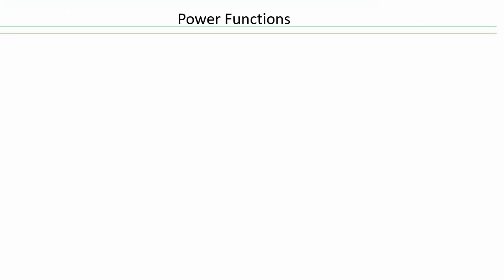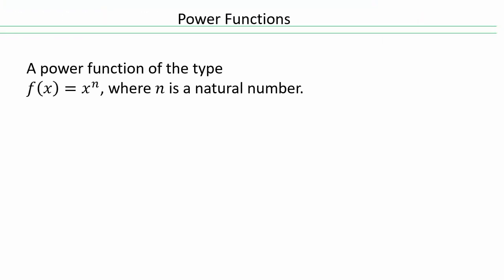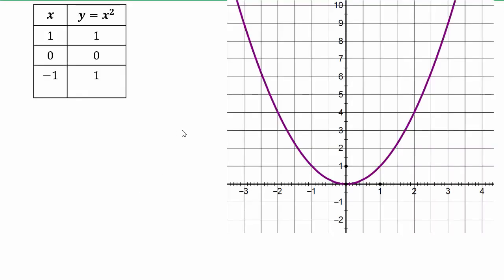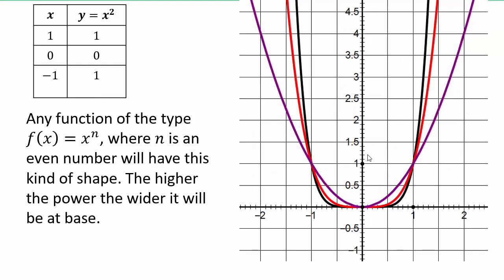Let's take a look at power functions. A power function is a function of the type x to the power n, where n is a natural number. You already know y equals x is a straight line, x squared is a parabola, and x cubed is the cubic function. Let's explore what happens when n is bigger than 3. Take the x squared graph — 0,0 and negative 1,1 and 1,1 are points on it. Now if you plot x to the 4th power, that's the red graph you see here.